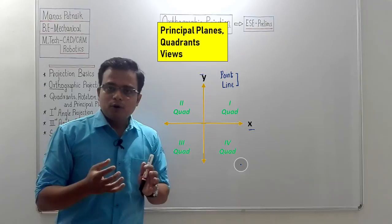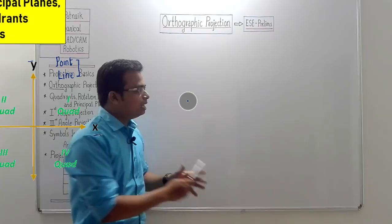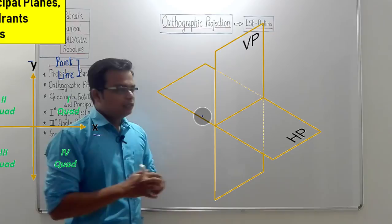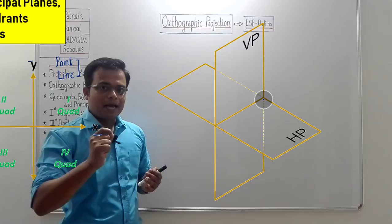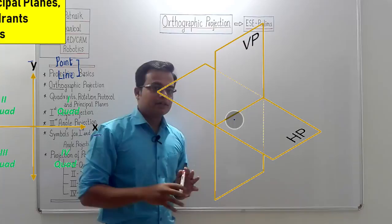But what about a line in a three-dimensional coordinate system with x, y, and z coordinates, or a three-dimensional object? To represent that, we use a 3D coordinate system framed with a vertical plane and a horizontal plane. The intersection of these two is a line, and this line is referred to as the reference line. The intersection of VP and HP is the reference line — remember this. This arrangement creates four quadrants: one, two, three, and four.